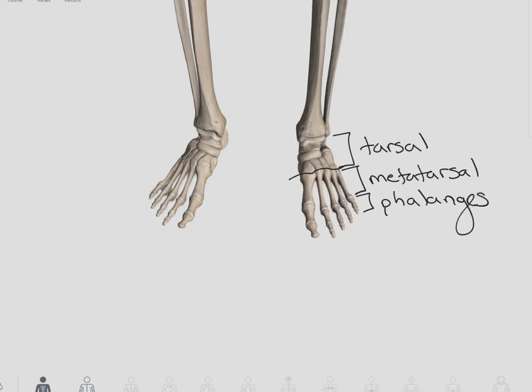Okay, so the tarsal bones end here, metatarsal is here, and then our phalanges are on the end. Remember, we number again, one through five, beginning with the big toe.